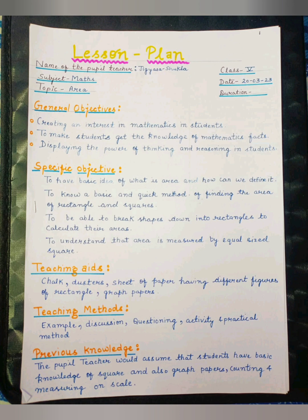Specific objectives: To have basic idea of what is area and how can we define it, To know a basic and quick method of finding the area of rectangle and squares, To be able to break shapes down into rectangles to calculate their areas, To understand that area is measured by equal sized squares.